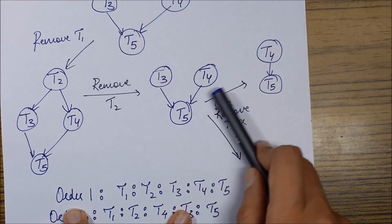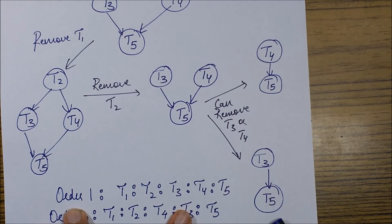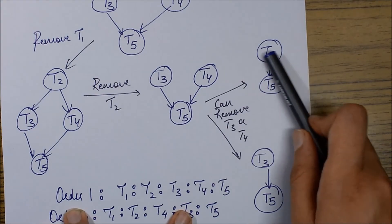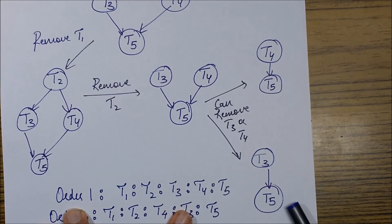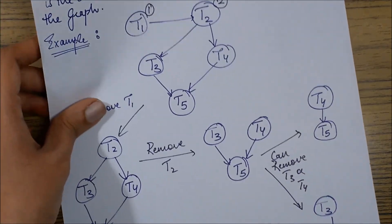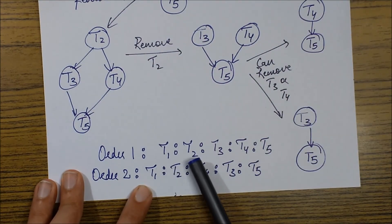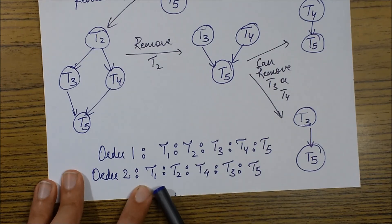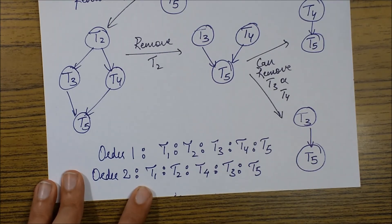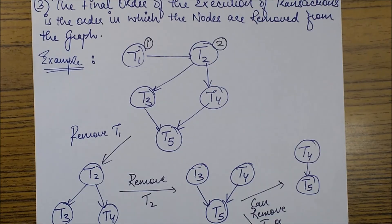If I remove T3, I get one resulting graph; if I remove T4 first, I get another. After that, in the first case I remove T4 then T5, and in the second case I remove T3 then T5. The two possible serial orders are: T1, T2, T3, T4, T5 and T1, T2, T4, T3, T5. These are the possible serial orders corresponding to this particular schedule.